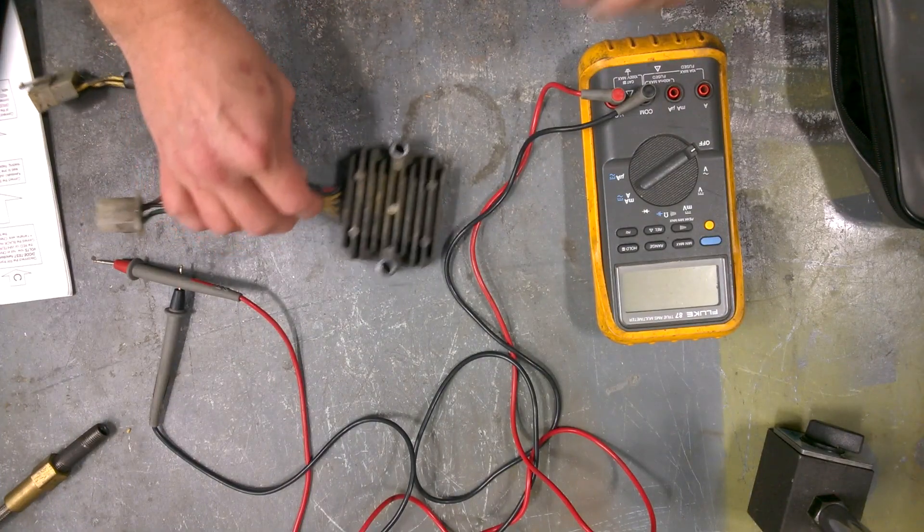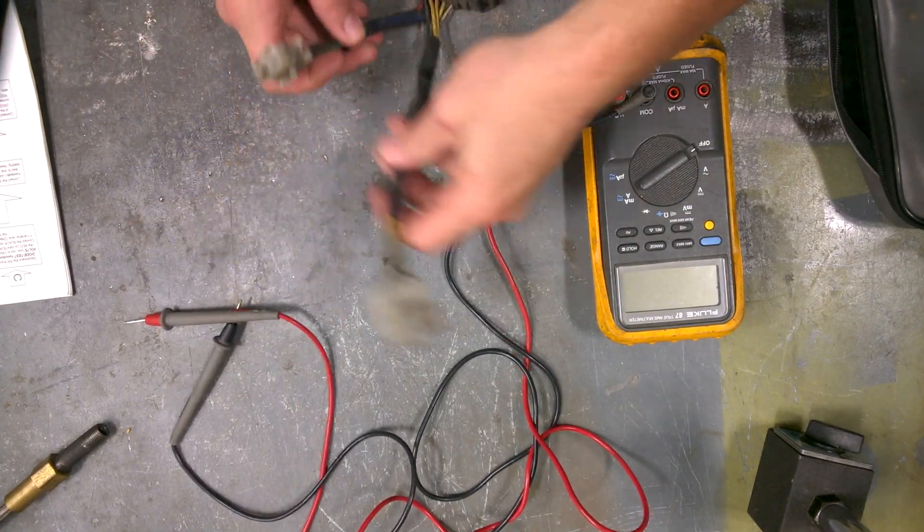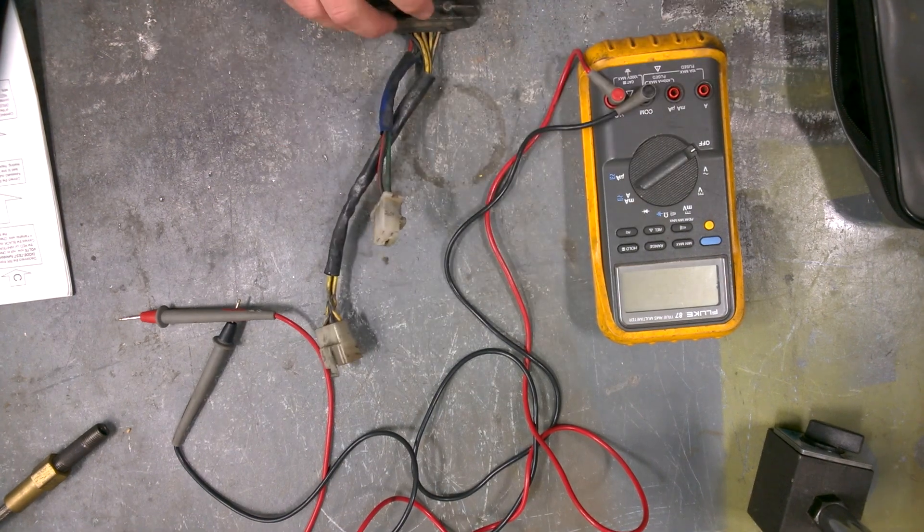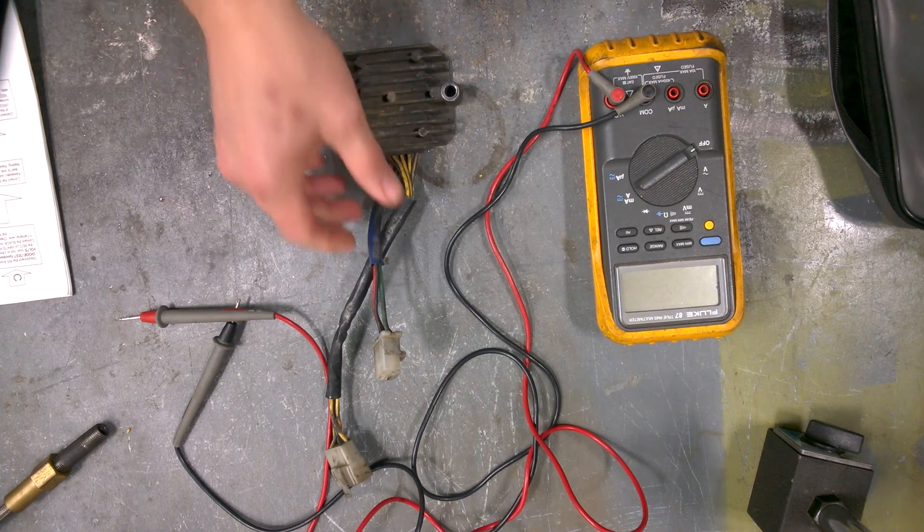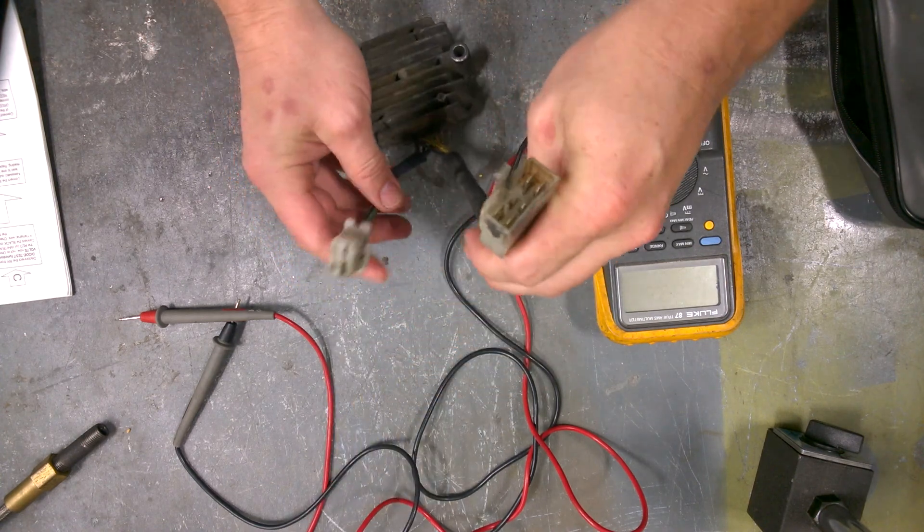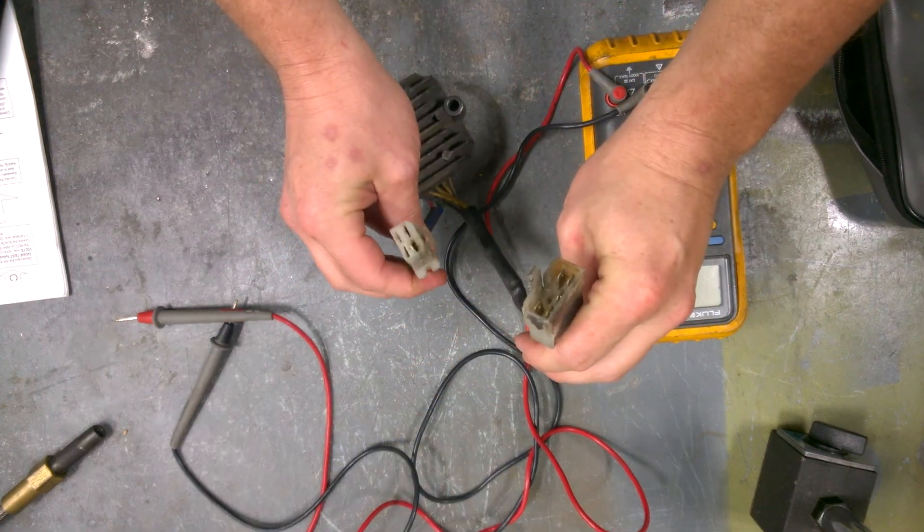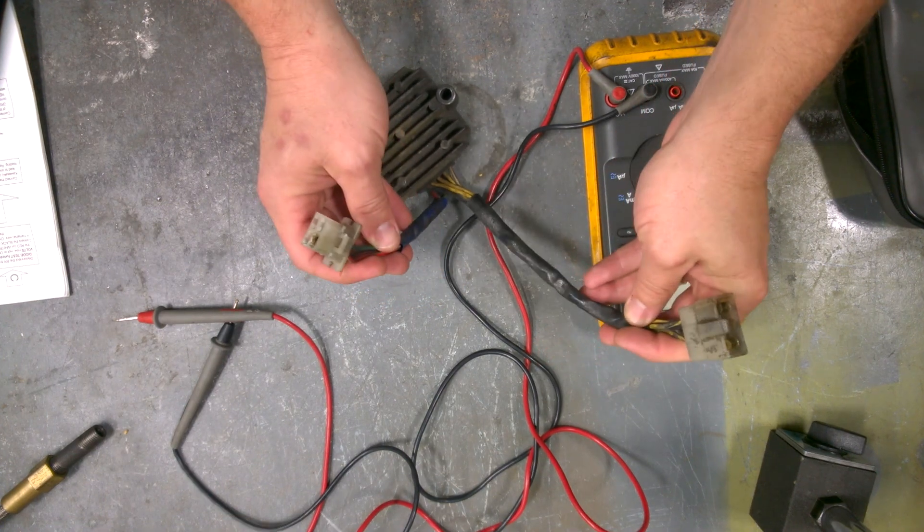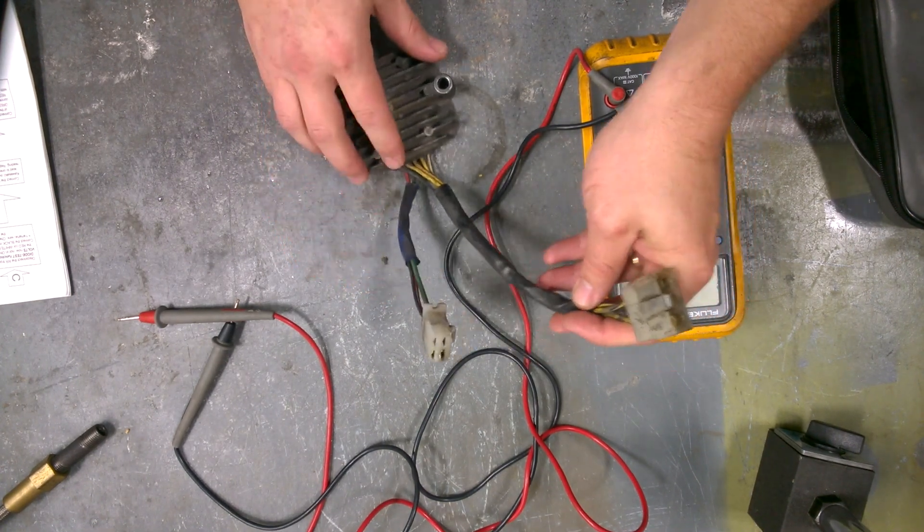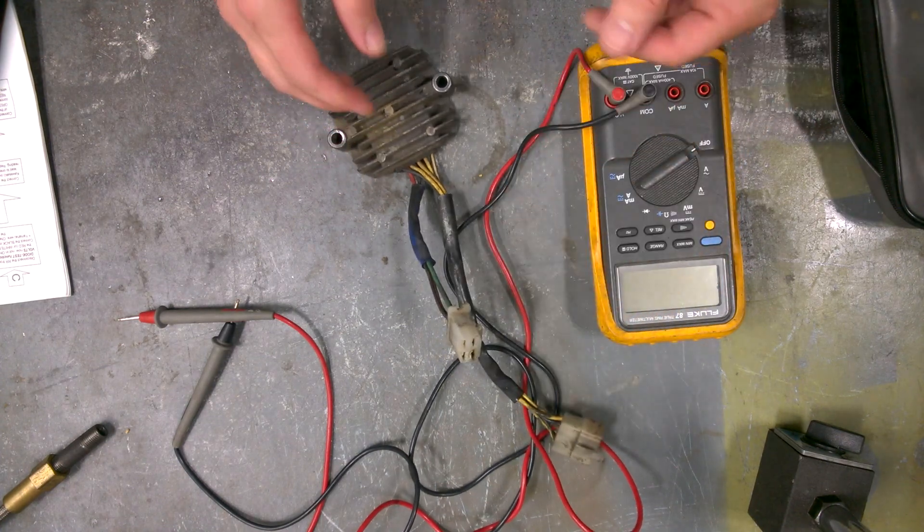Okay, I'm here to show how to test a rectifier regulator off of a motorcycle. This is a 1982 CB750. It's a little different than some of the regulator rectifiers off motorcycles because it has some extra wires, and that's because it's a non-permanent magnet type charging system.